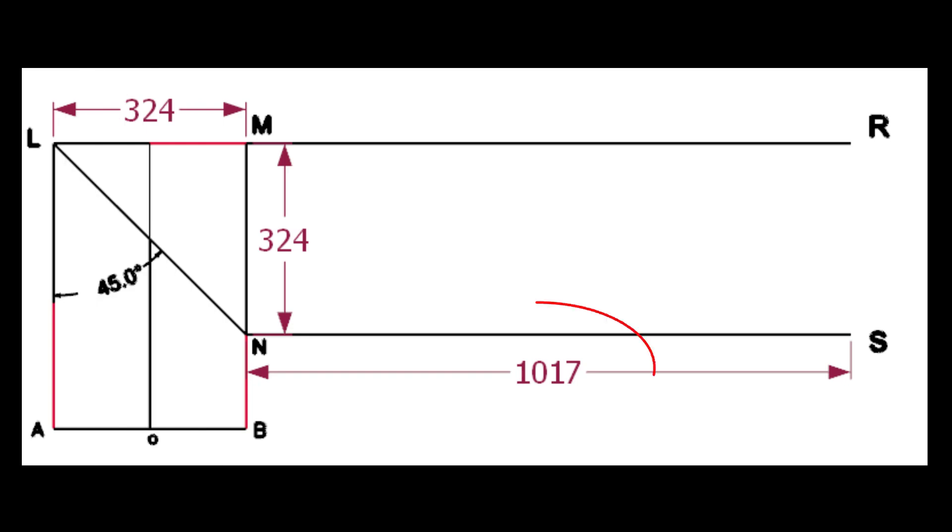We know the circumference of the pipe is 1017 millimeters. Draw the lines MR and NS.